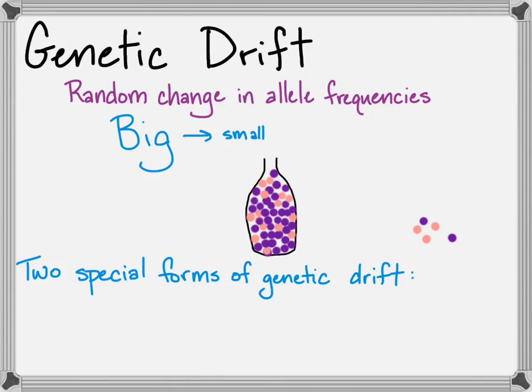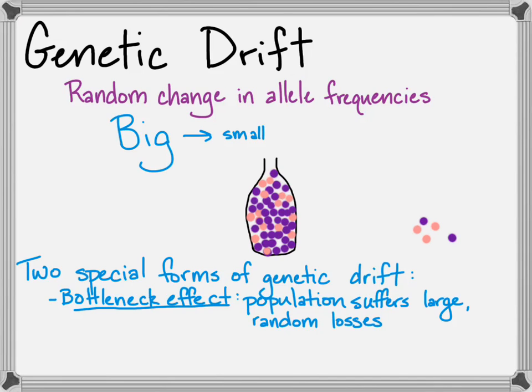There are two classic examples of genetic drift that have their own vocabulary terms. One is a bottleneck, a population bottleneck. If a population suffers large random losses - something like a natural disaster - the surviving population might have a very different phenotypic makeup than the original population, because you randomly knock out most of the population.